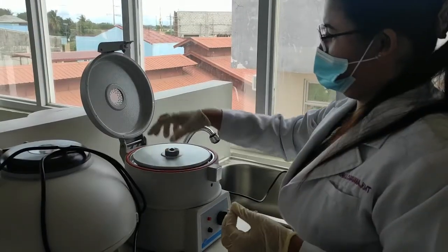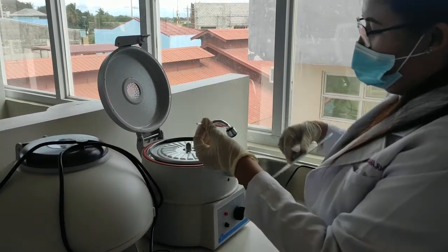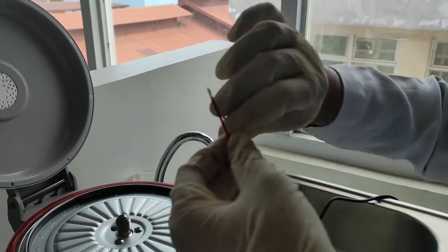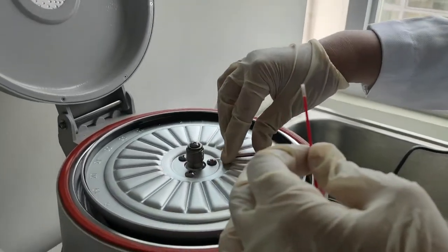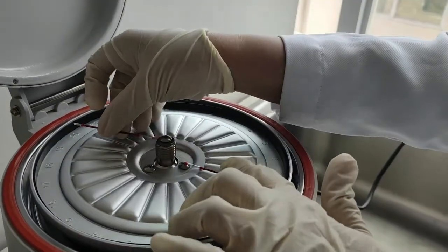Using a microhematocrit centrifuge, always remember that the sealed area should touch the rubber part of the centrifuge or else your sample will wash out. Always put the rubber part and the sealed part together or else your sample will wash out.